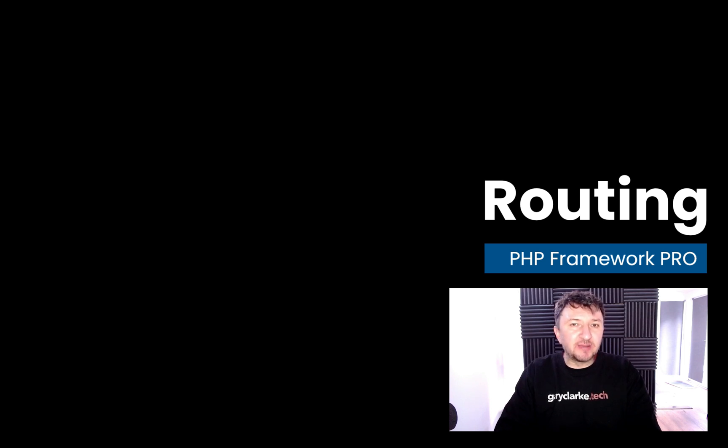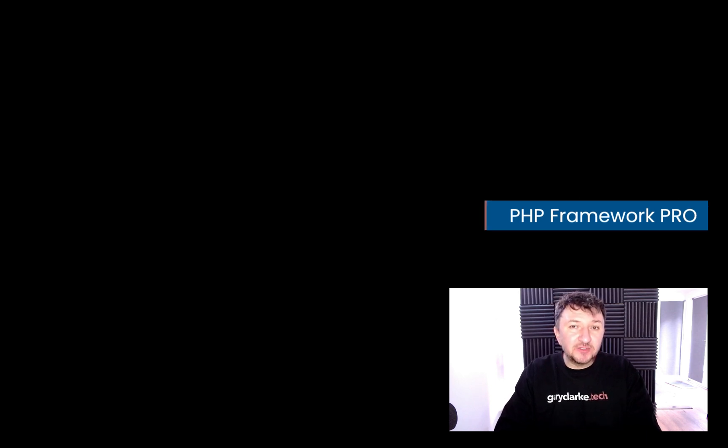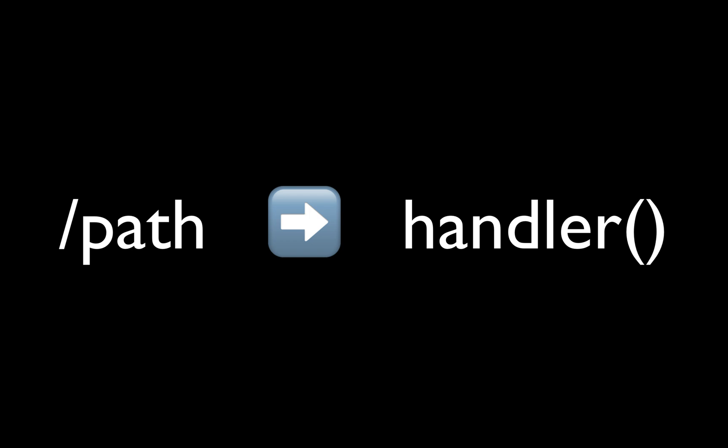Now that we have our HTTP essentials in place — our request class, our response class, and our kernel — what we want to do now is to be able to have custom handling for different requests to different URIs. The way that we can do that is with routing. We know that when a request is received, it is forwarded always to our public index.php file, but now we need to route that to a handler, and we use the path info or parts of the URI to determine what handler it should be forwarded to.